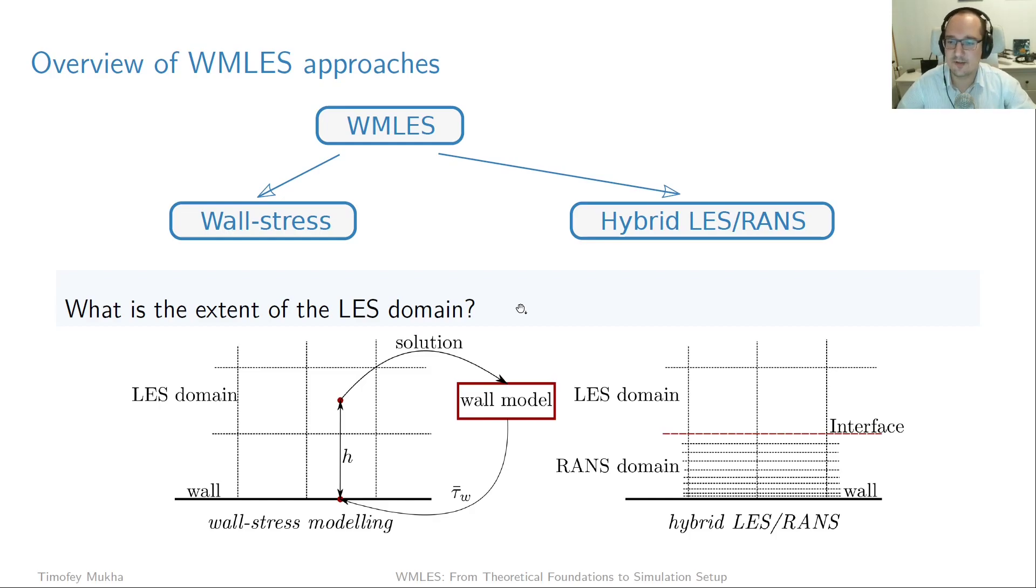As a first level of classification of all wall-modeled LES approaches, we're going to divide them into two types. One type is called wall-stress modeling and the other hybrid LES/RANS. So what is the difference between these two approaches? Well, it's the answer to the following question: what is the extent of the LES domain?